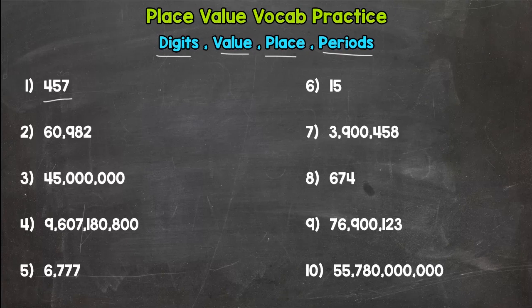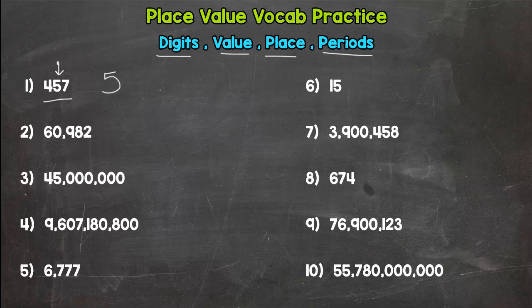And you should have five. You should not have a 50. A 50 is not a digit. Remember, a digit is zero through nine, the symbols we use to create our numbers. So we have a five sitting in the tens place.